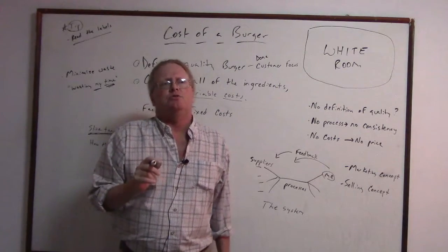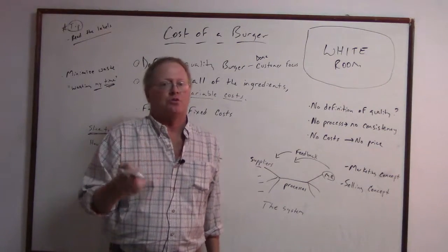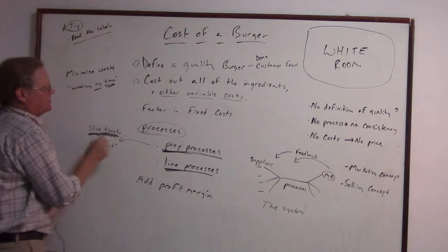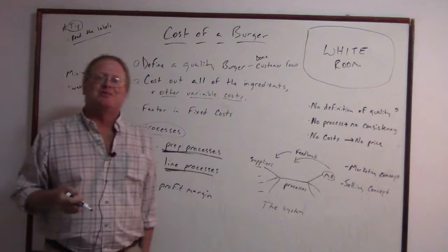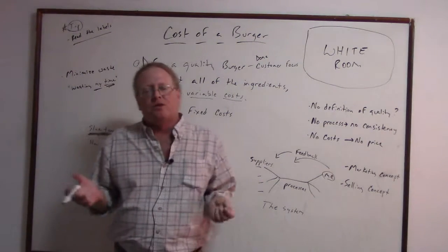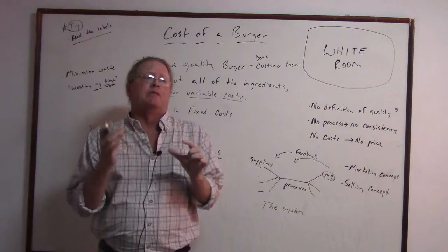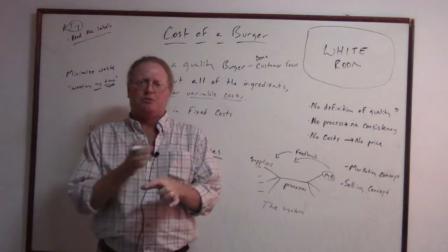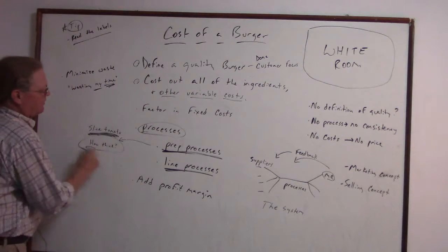You can look up a video on YouTube for McDonald's and watch how fast they can make a quarter pounder. Now, your prep processes would include maybe slicing the tomato — but how thick do you slice it? If you don't know how thick the slices are, and you don't know how big the tomato is going to be, how would you know how to cost out the tomato? Is it four thick slices or six thin slices? So, how thick?